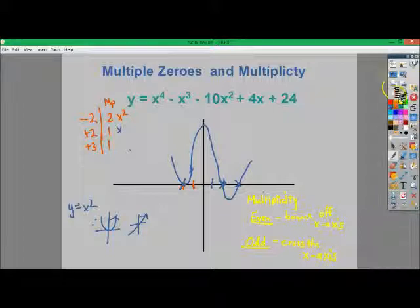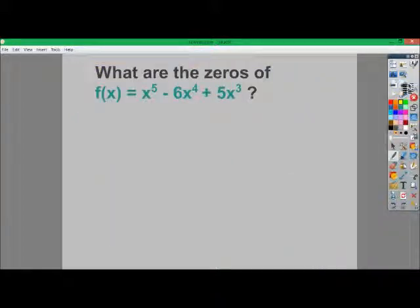Let's look at one more. So this x to the 5th minus 6x to the 4th plus 5x to the 3rd. What I'm going to do first is factor out x to the 3rd of course. End up with x squared minus 6x to the 1st power plus 5. So when I factor that out, it gives me x minus 5 and x minus 1.